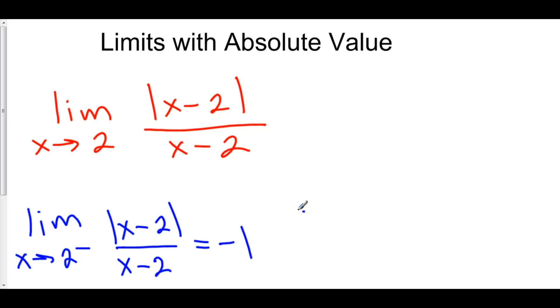Furthermore, if we were to analyze this function the exact same way from the right-hand side of 2, we would find something very similar. Let's try 2.1. The absolute value of 2.1 minus 2 is .1, and 2.1 minus 2 on the bottom is .1. We have .1 over .1, and that is 1.